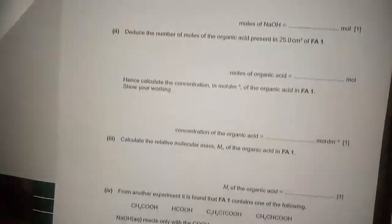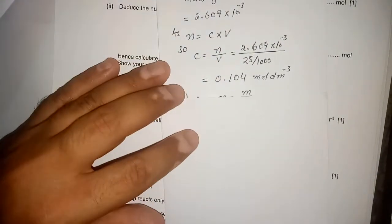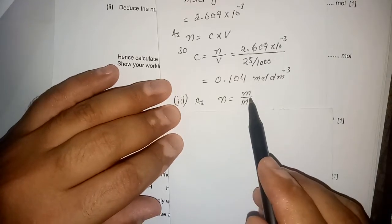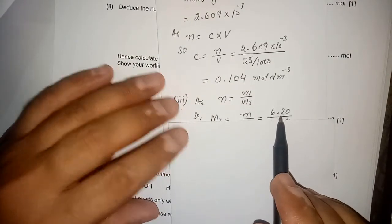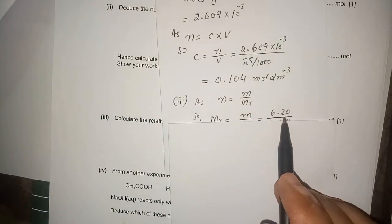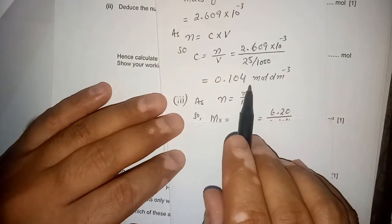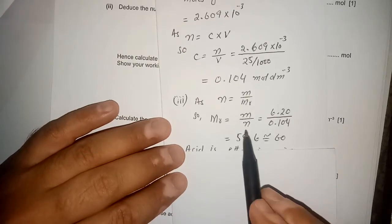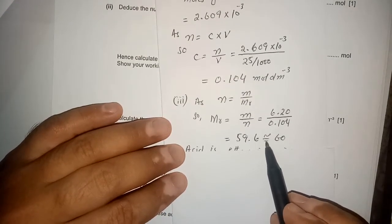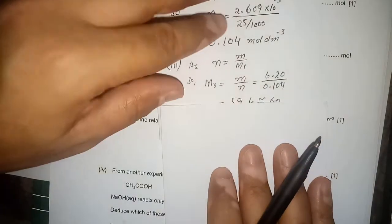The next part asks you to calculate the relative molecular mass (Mr). We know that moles = mass / Mr, so rearranging gives Mr = mass / moles. The mass is given in the question as 6.02 g. Using the moles calculated previously, we get Mr = 59.6, which is approximately 60. An Mr of 60 indicates the presence of ethanoic acid.